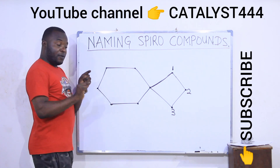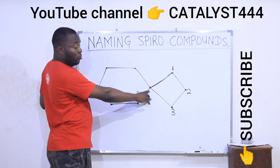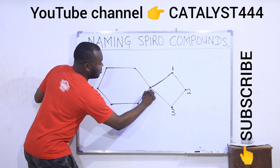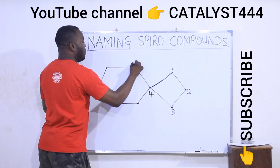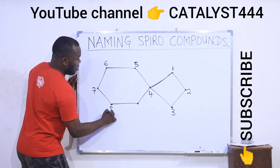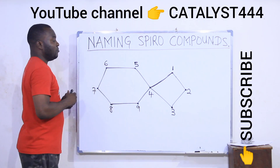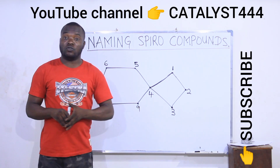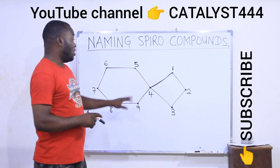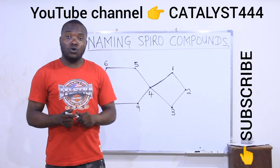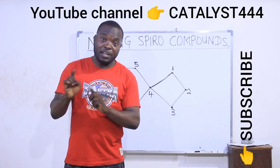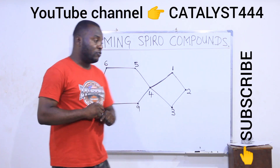After numbering the lower ring, you number the spiro carbon — that is the carbon that connects the two rings. Continuing: four, five, six, seven, eight, and nine. There are a total of nine carbon atoms here. Because there are a total of nine carbon atoms, I know the name will end with nonane. Remember, nonane means nine carbons.